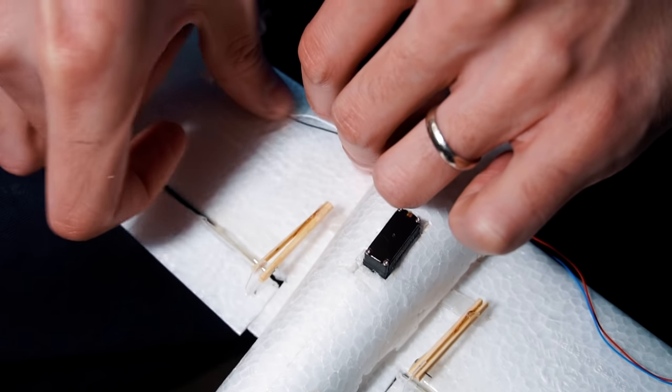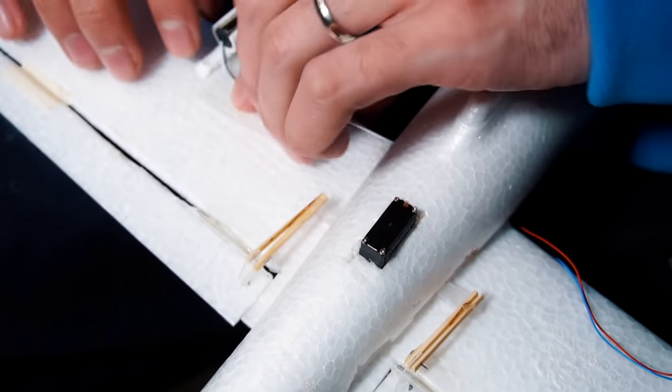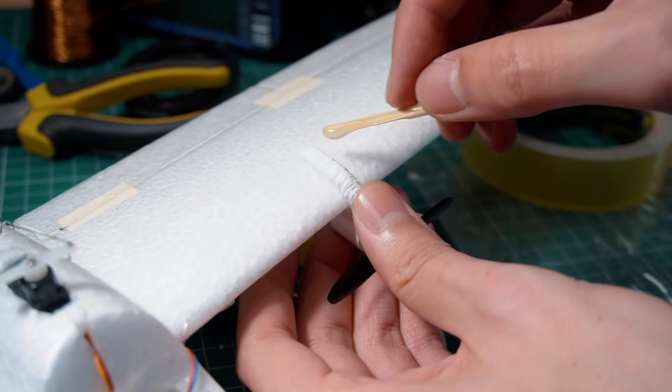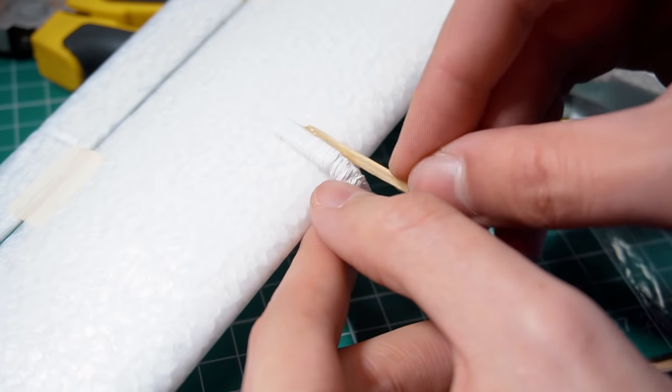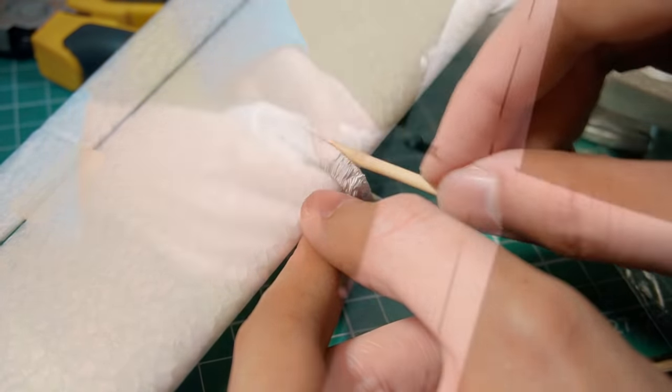All that's left is to make some adjustments like putting tape on the wires of the motors and putting some glue to the base of the motors. And finally we're ready to go and fly.